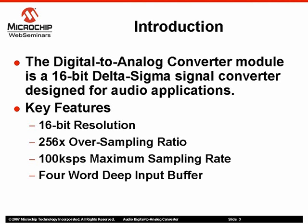The midpoint output is an offset voltage level that represents the midpoint of the output voltage range. Some key features of the DAC are 16-bit resolution, 256 times oversampling rate, 100 kS per second maximum sampling rate, and a forward deep input buffer.